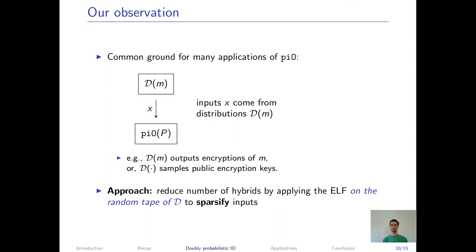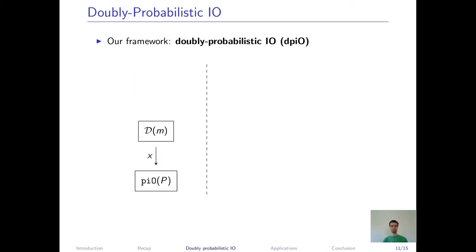In our approach, we leverage this fact as follows. We apply the extremely lossy function on the random tape of this input distribution. And as a result, the number of inputs can be sparsified without losing their structure. So evaluation on those inputs, those sparsified inputs, still has the expected result, because it's just a fewer amount of inputs, but still the same mean. We abstract this property and provide a framework which we call doubly probabilistic I.O., and this framework captures these cases.